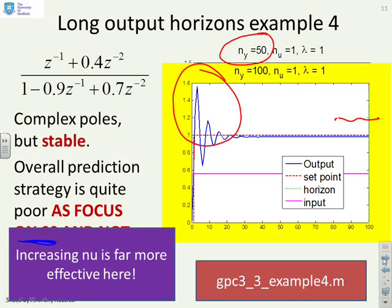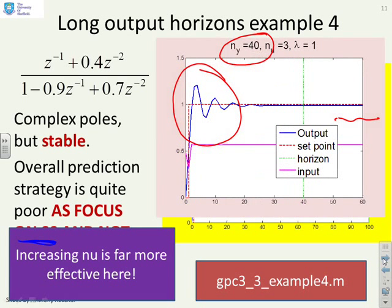In this particular case, increasing the control horizon would be a far more effective way of getting a good response. So here you'll notice what I've done is I've increased the control horizon to be 3, and therefore this oscillation around here is far better than it was before.